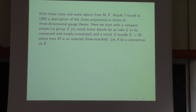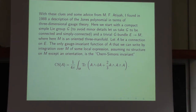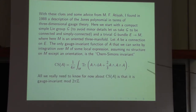Since we're trying to make topological invariants, there won't be a Riemannian metric on M — M will just be an oriented smooth manifold. With no structure except orientation, there's only one gauge-invariant function of A that we can write by integration of some local polynomial in A and its derivatives. This is the Chern-Simons function, which was actually slightly hidden in yesterday's second lecture about flat connections.